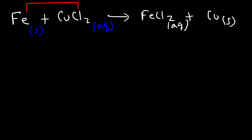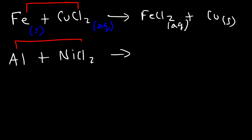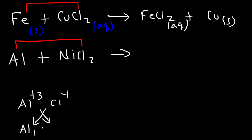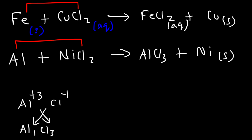If aluminum reacts with nickel chloride, aluminum pairs up with chloride. Aluminum has a +3 charge and chloride has a -1 charge, so the chemical formula of the product is AlCl₃. Nickel is displaced out of the solution as solid nickel metal.